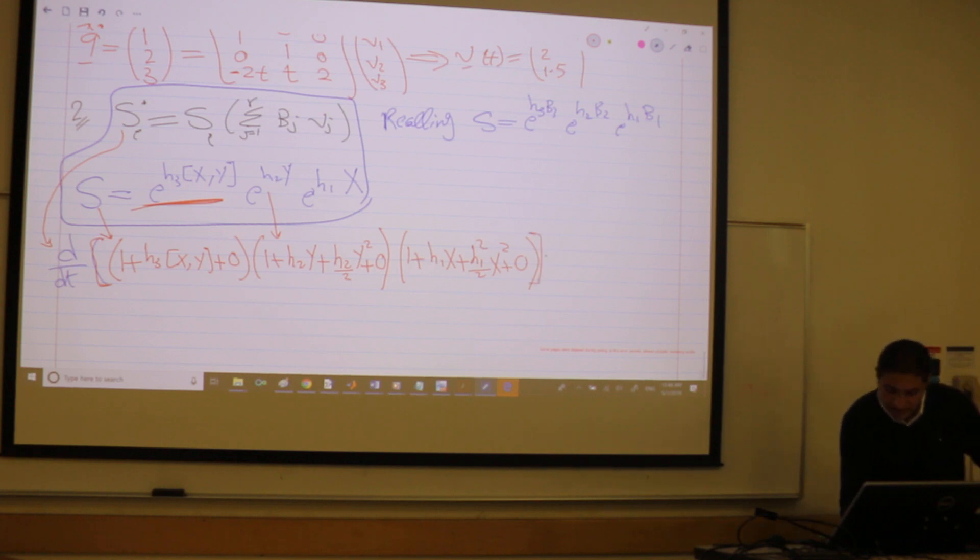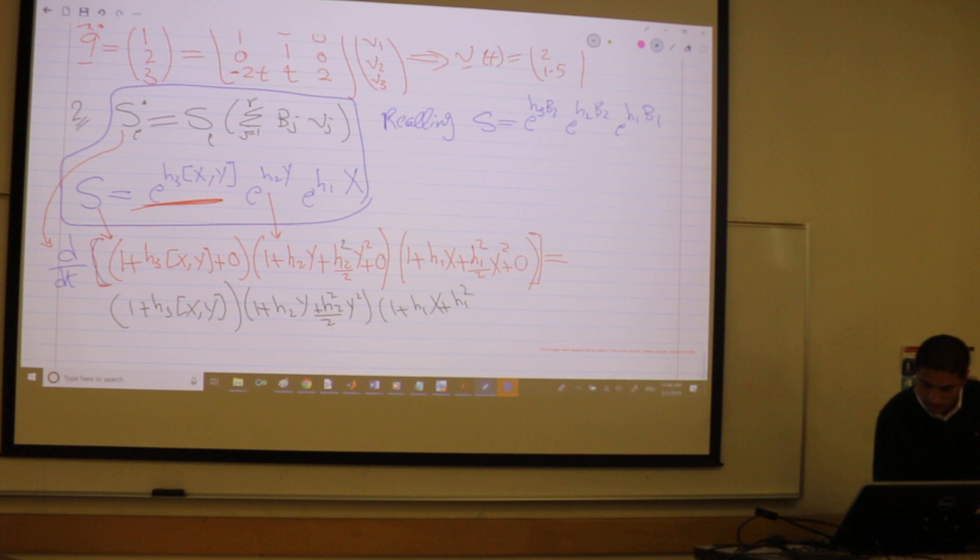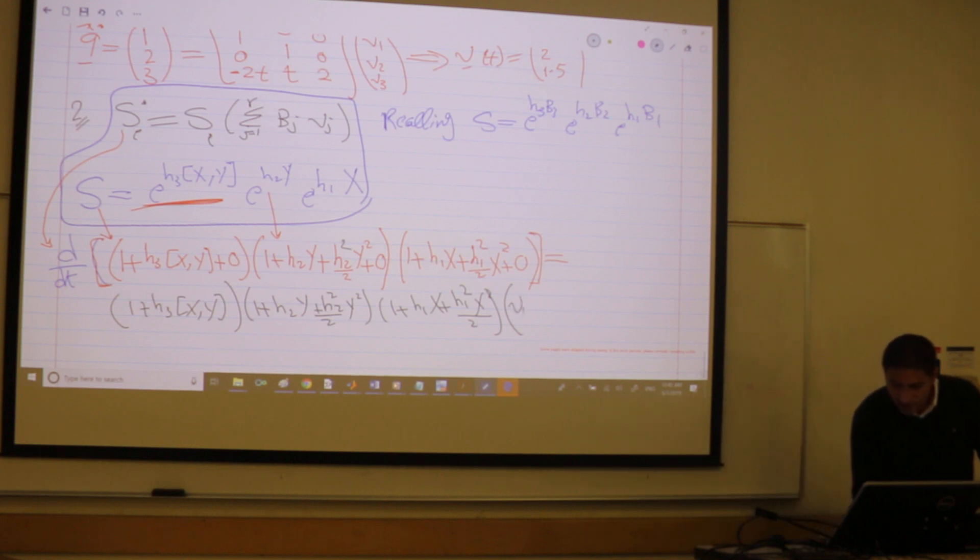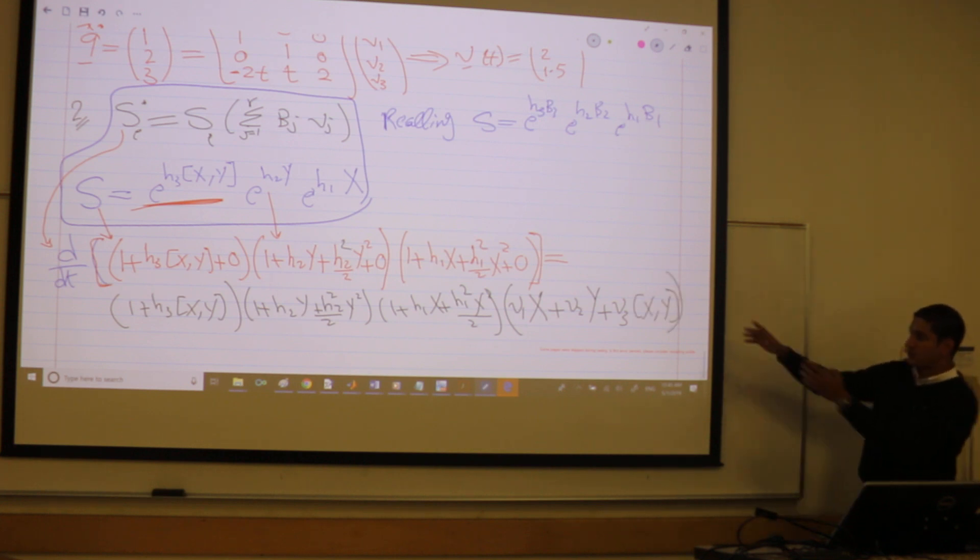The d by dt for this guy is equal to the same S. So the same thing. I'll exactly copy them again. 1 plus H2 Y plus H2 squared Y squared. 1 plus H1 X plus H1 squared X squared over 2. Multiplied. I'm substituting this equation, right? So this is S multiplied with summation your B's and V's. So I have V1 times the first vector in the basis, which is X. V2 times the second vector, which is Y. V3 multiplied what? V3 multiplied what? The algebra. So this is a very important formula. And if you construct it, I mean, the rest is super easy. Any question about constructing this formula?